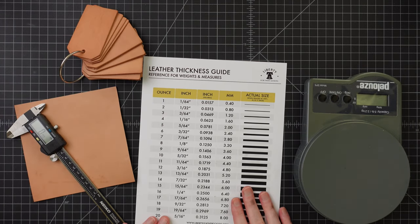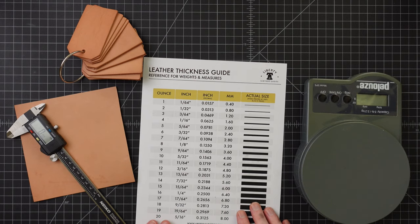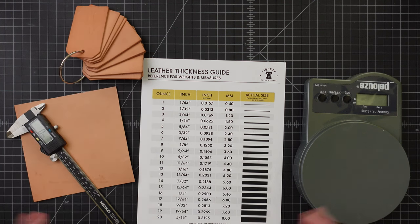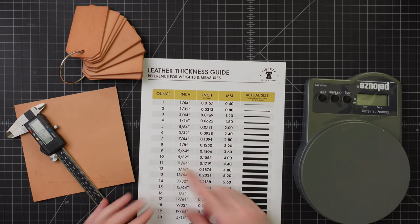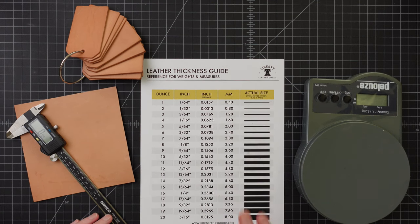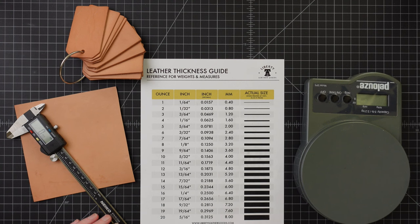That is leather thickness and weights, where they originated from, how they're calculated. And hopefully that helps when you're planning a new project to figure out what thickness you want to use. And then when you're shopping to understand why is it called ounces, where does the thickness come from, how's it calculated, and even why it's between two ranges due to the overall natural thicknesses of the hides and how they vary. Good luck. Hope you learned something fun and enjoy crafting.